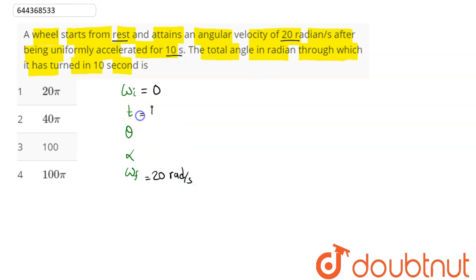For 10 seconds it is uniformly accelerated, so alpha is constant. Here it is being asked the angle rotated in radians. We have ω_f, ω_i, θ, and t. First we need to find alpha.